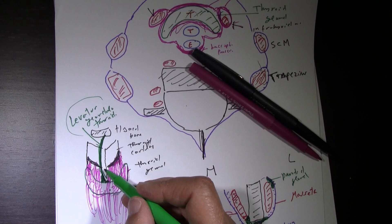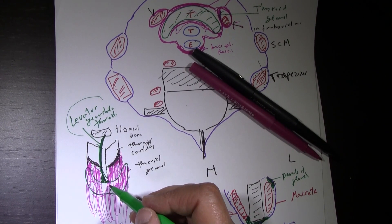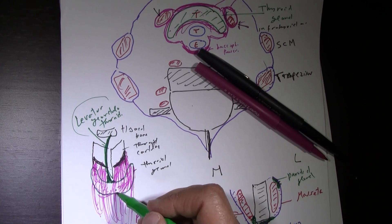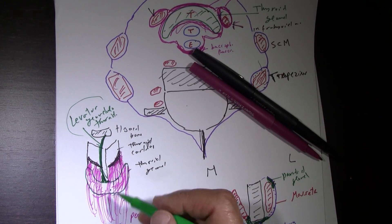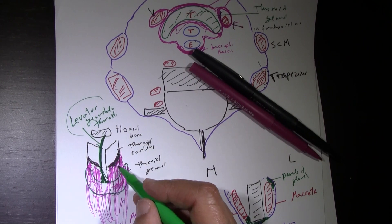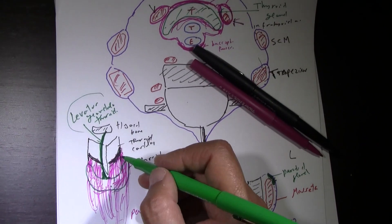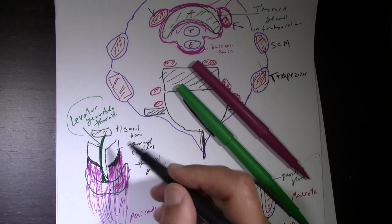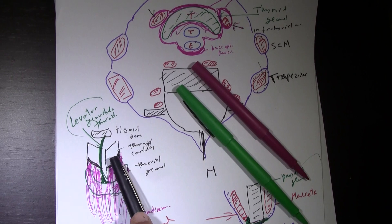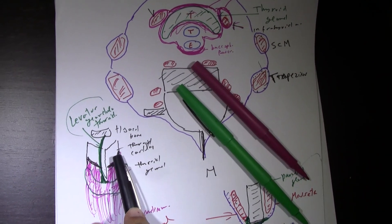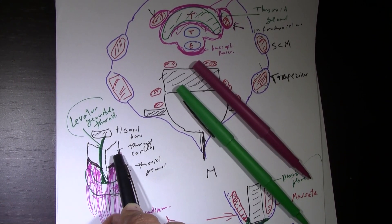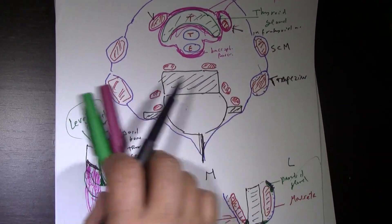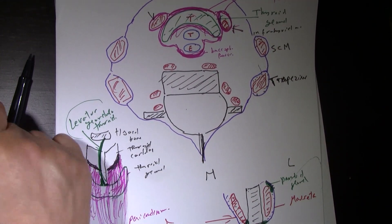This arrangement also explains why, if there is a tumor or swelling of the thyroid gland, it can expand downward into the mediastinum but not upward. Expansion upward is limited by the attachment of the pretracheal fascia to the thyroid cartilage and the attachment of the sternothyroid muscle to the oblique line, but the gland can freely expand downward toward the mediastinum.